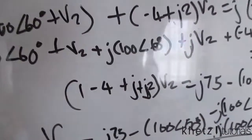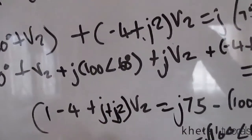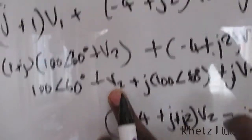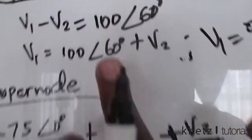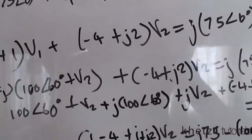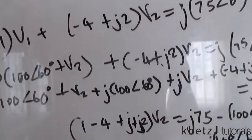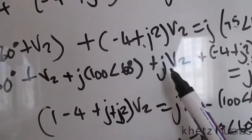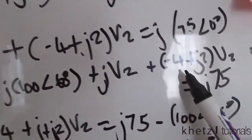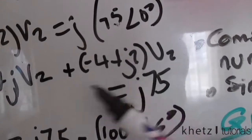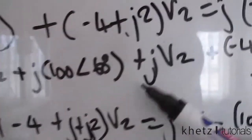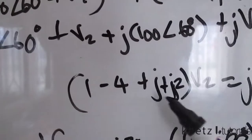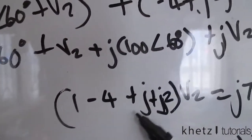Now that we have substituted, we group the like terms. The only variable remaining is V2. Grouping everything: from the substitution we get 1, from the rest we have negative 4 plus J2, and also J from the J·V2 term. Adding these up gives (negative 3 plus 3J)·V2.